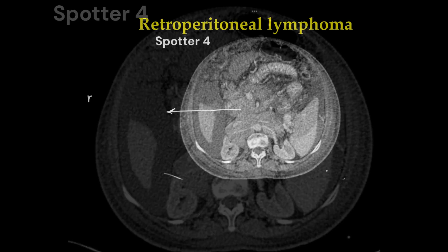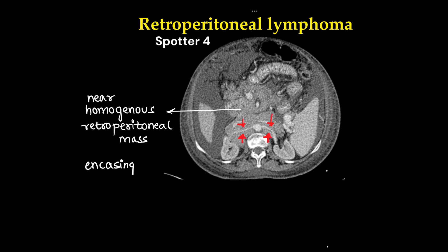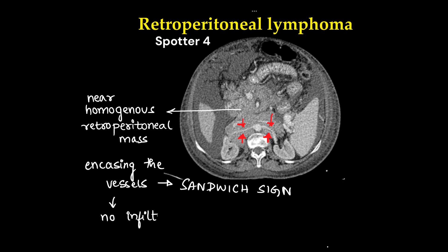This is a case of retroperitoneal lymphoma. We can see a near homogeneously enhancing retroperitoneal mass lesion which is encasing the vessels. Here we can see bilateral renal arteries encased by the tumor. The aorta is compressed by the tumor but there is no infiltration — this is called the sandwich sign.